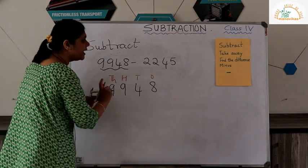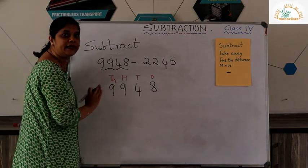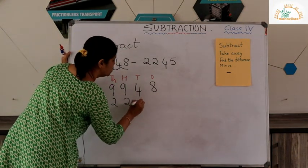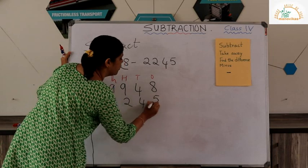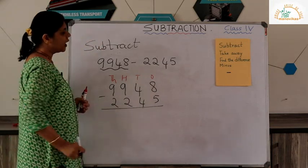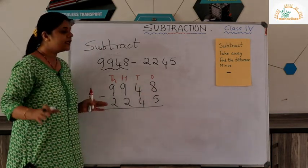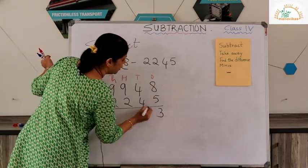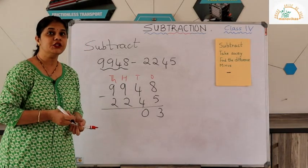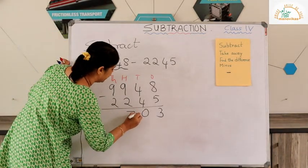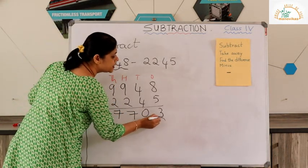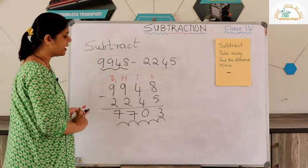Write the second number just below it, taking care to write digits in their respective places: 2245. Put the minus sign and subtract, starting from the ones place. Eight minus five is three, four minus four is zero, nine minus two is seven, and nine minus two is seven again. The answer is 7703.